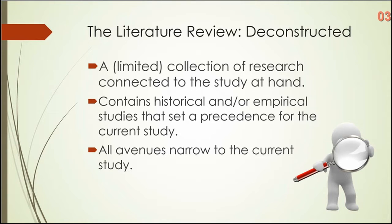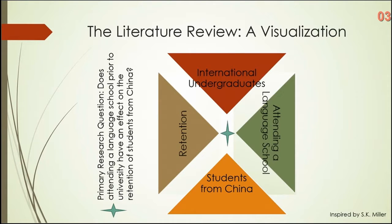In your lit review you'll want to think about what I call the inverted pyramid — which is actually what everyone calls it. You want to narrow all avenues down to your study. Think about this visually. Your research could be centered in a Venn diagram — a series of interlocking circles, usually three — where the middle of the Venn diagram is your study.